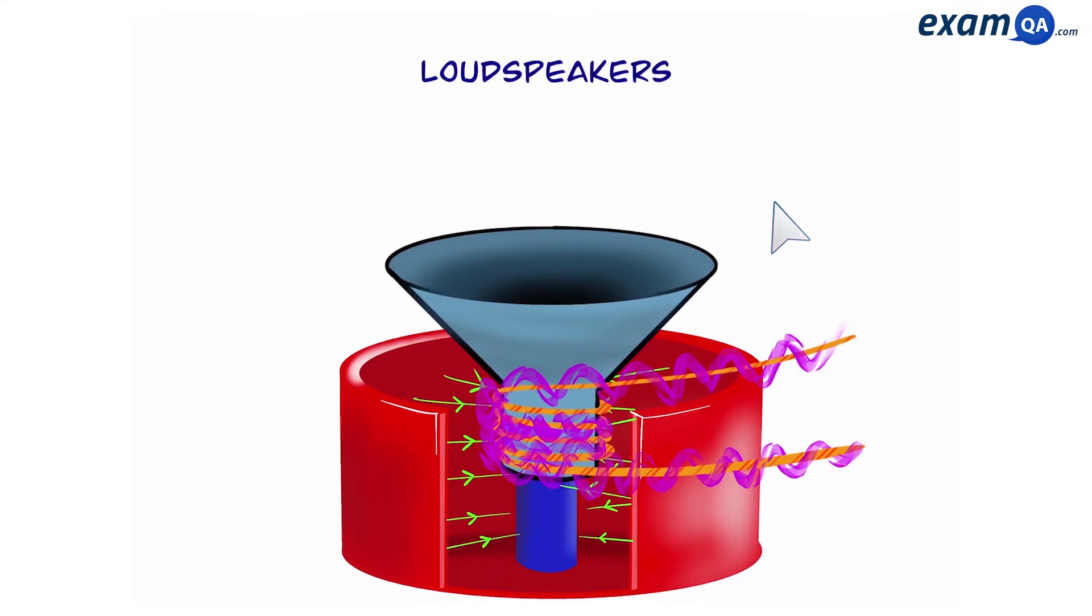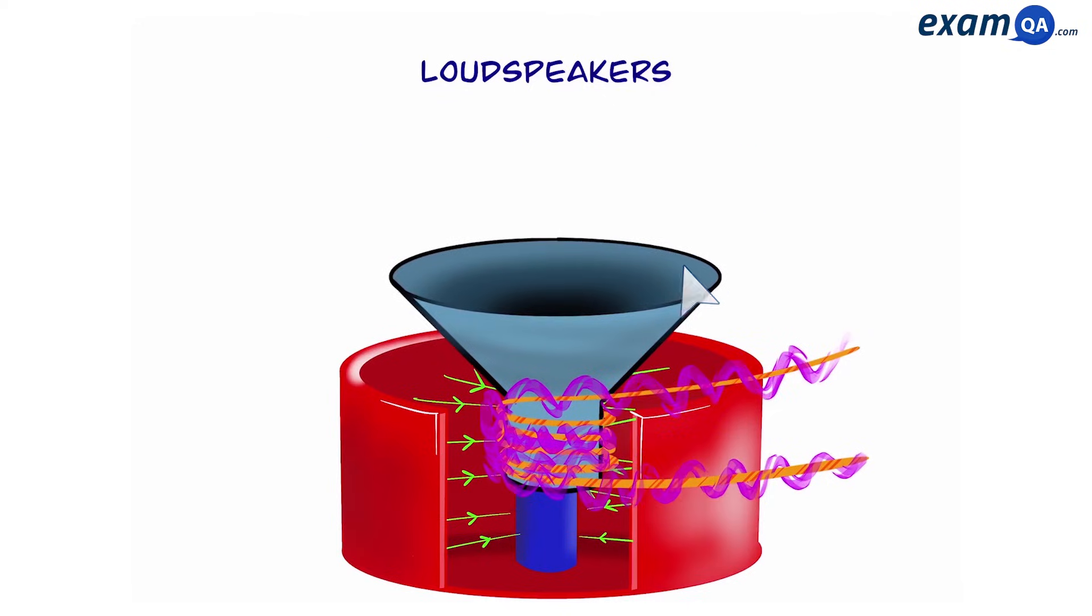So that force will not only be felt by the wire but also by the paper cone since the wire is wrapped around it and that force will cause the coil and the cone to move. So we can see that the cone will begin to move up and down in this manner.